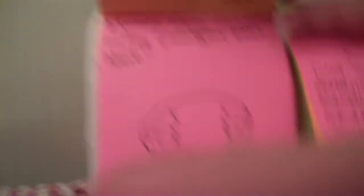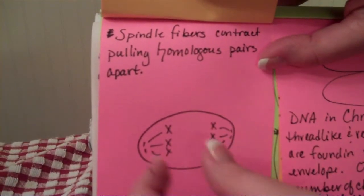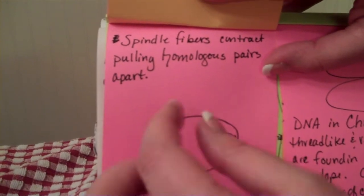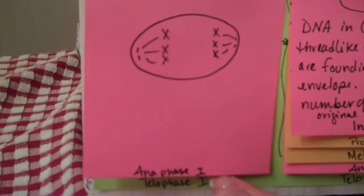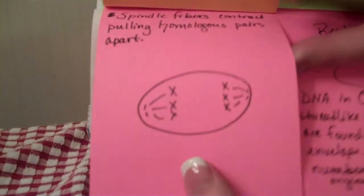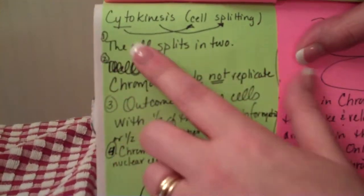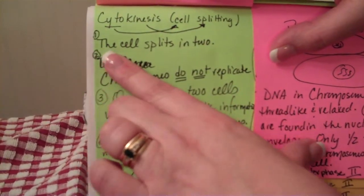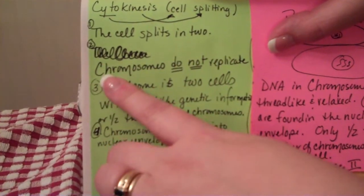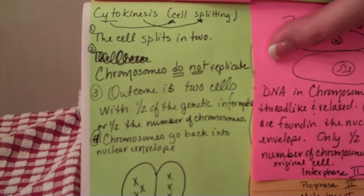It should still look familiar to you. The next phase — you have the spindle fibers contracting, pulling the homologous pairs apart, going to the poles of the cell. They're leaving the equator, going to the poles, and this is Anaphase 1. The next step should also look familiar — it's cytokinesis. Remember, that was literally cell splitting. Here, the cell splits in two. The chromosomes, however, do not replicate like they did in that other process.